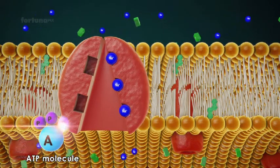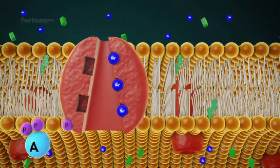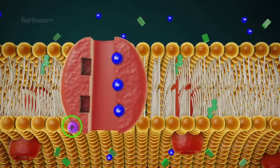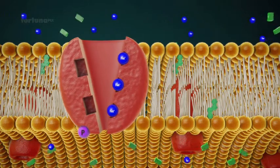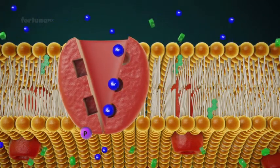One phosphate group will remain attached to the protein channel on the inside as the channel opens towards the outside of the cell.